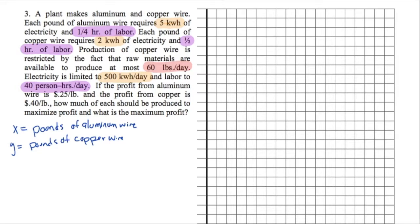Okay, so let's go ahead and let's actually tackle that copper wire bit first. So if we're limited to 60 pounds of copper wire in a day, that must mean that Y must be less than or equal to 60. Great. Well, let's look at the electricity component. Five kilowatt-hours for the aluminum. So that's 5x. And two kilowatt-hours for the copper. So that's 2y. Well, that must be under 500 kilowatt-hours per day. So less than or equal to 500. Then we've got our labor. It's a quarter of an hour for the aluminum and half an hour for the copper. You love fractions. You're welcome. That must be less than or equal to the 40 hours total for the day. So that's our system of equations.